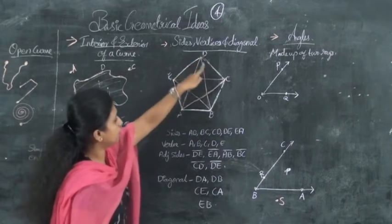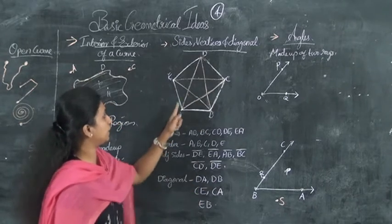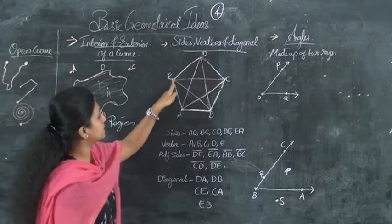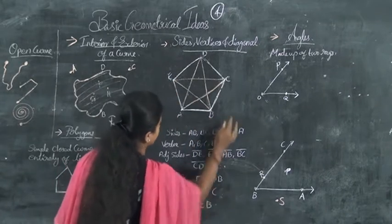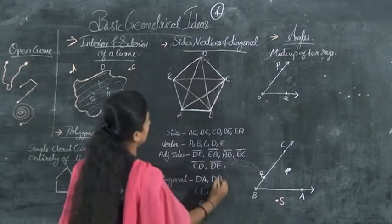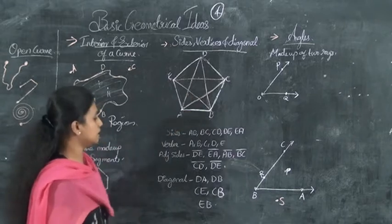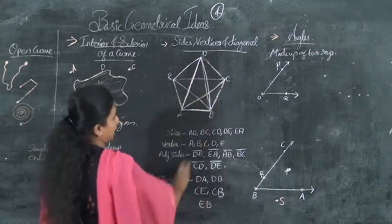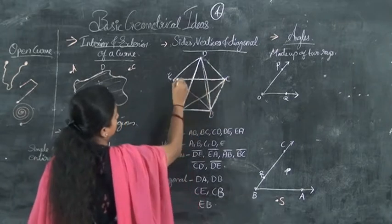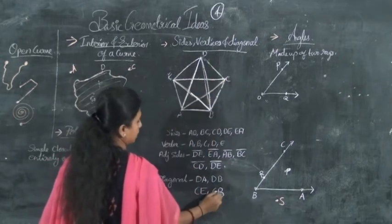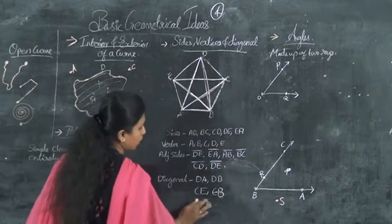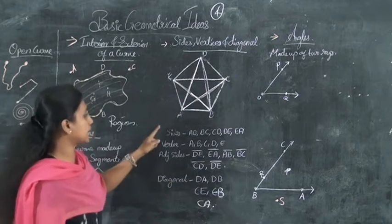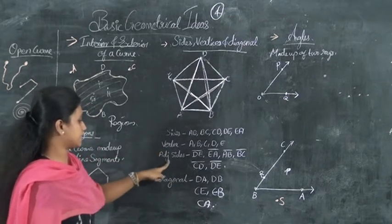The diagonals connect non-adjacent vertices. DA and DB are diagonals. CE and CA are diagonals. CE and CB are also diagonals. And EB is a diagonal. These all are the diagonals of the polygon. So a polygon has sides, vertices, adjacent sides, and diagonals.